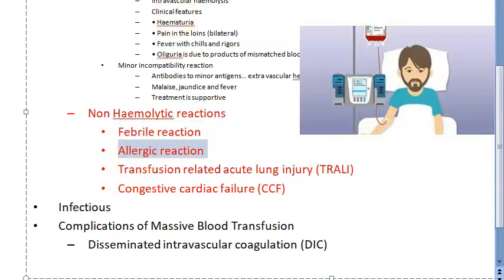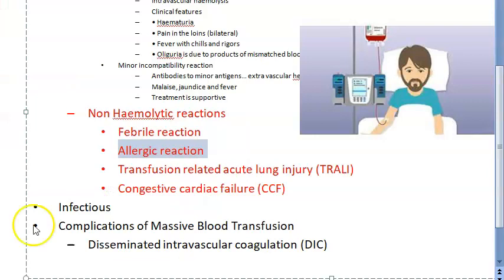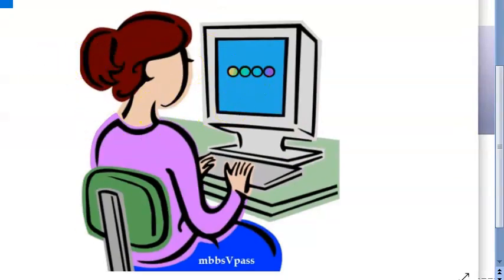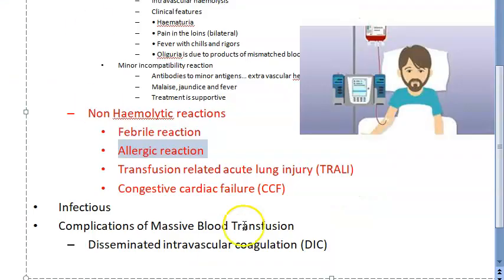Coming to allergic reaction: there can be allergy to plasma products. This will manifest as chills, rigors, and rashes. You should give antihistamines to these people - you can give chlorpheniramine maleate.